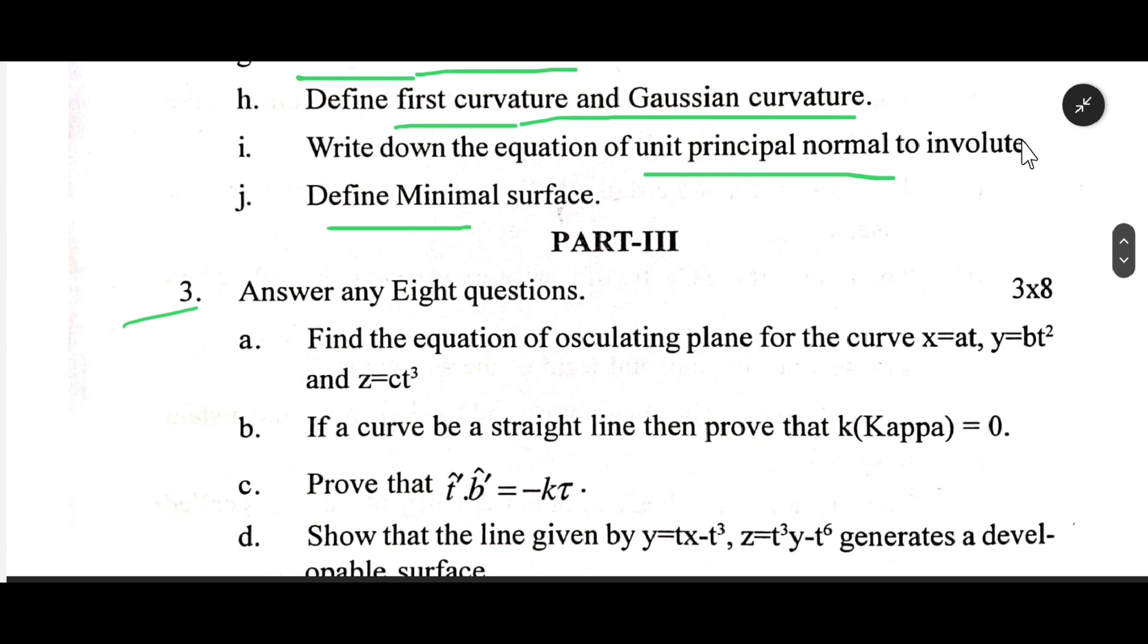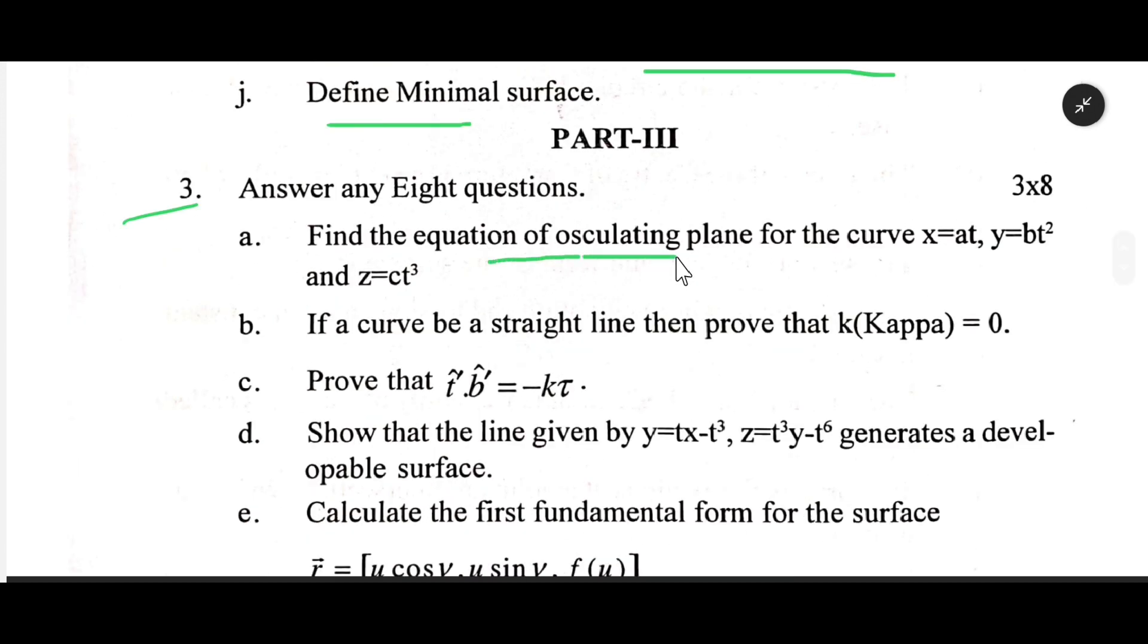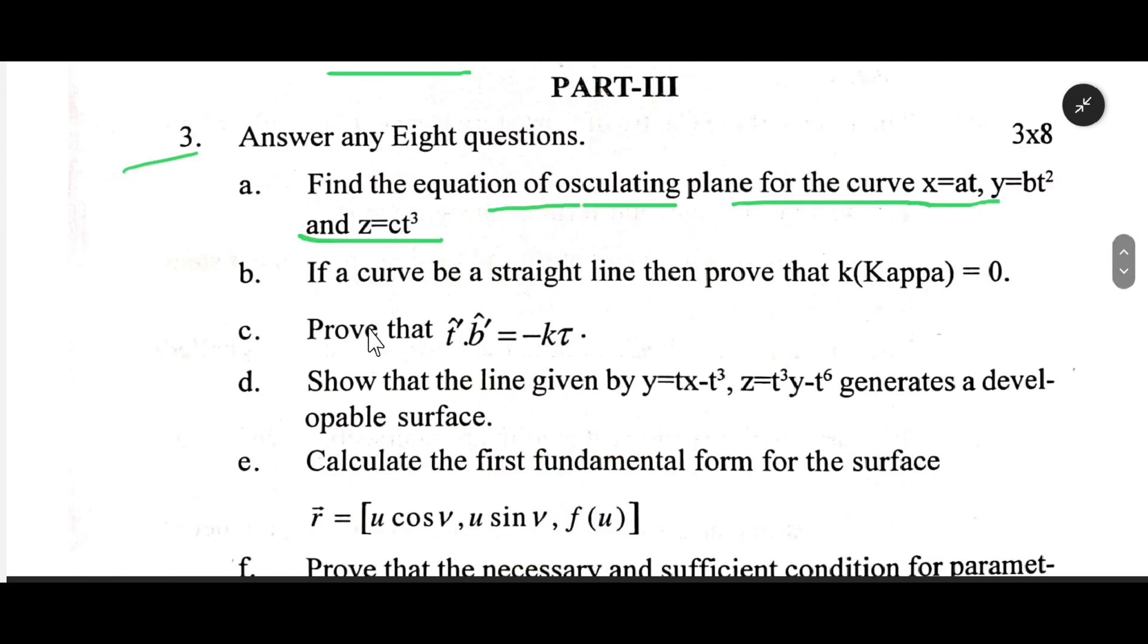Part 3: Answer any eight questions. Number three: Find the equation of osculating plane for the curve x = at, y = bt², and z = ct³. If a curve be a straight line, then prove that κ (kappa) = 0. Prove that t̂' · b̂' = -kτ.